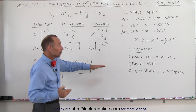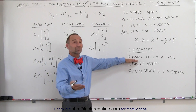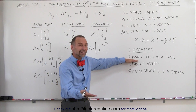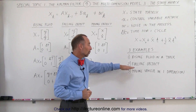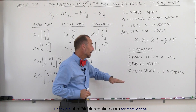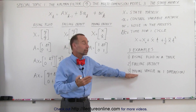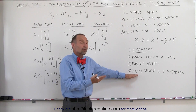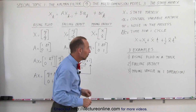The three examples we're going to look at are: we have some fluid rising at a constant velocity in a tank, we have an object that is falling under the influence of gravity, and we have an object like a vehicle moving in one direction — let's say in the x direction.